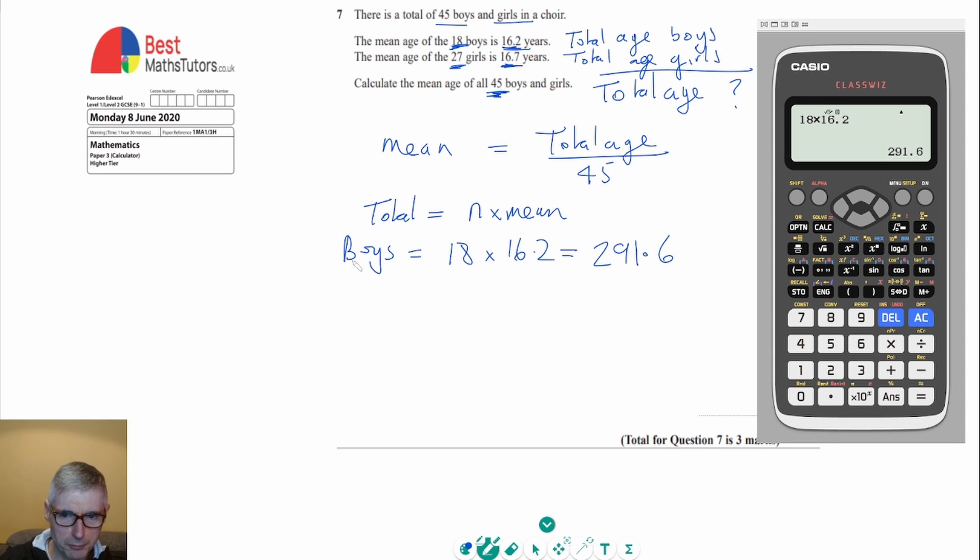Okay, I'm going to repeat that process for all the girls as well. I've got 27 girls, and their average age or mean age is 16.7.